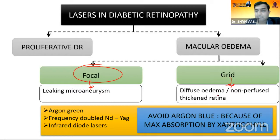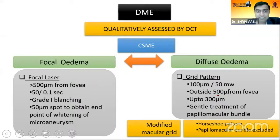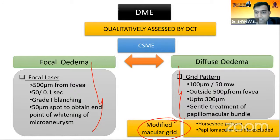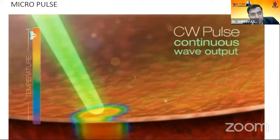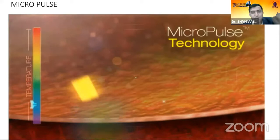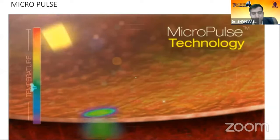In qualitative assessment, CSME and focal edema features guide use of focal or grid patterns. In modified grid, a horseshoe pattern is used to avoid the papillomacular bundle. Micropulse laser therapy (MPLT) works differently from conventional laser: while conventional laser shows a continuously rising temperature curve, MPLT inputs short bursts so the temperature rises and falls repeatedly, dissipating less heat to surrounding tissues.